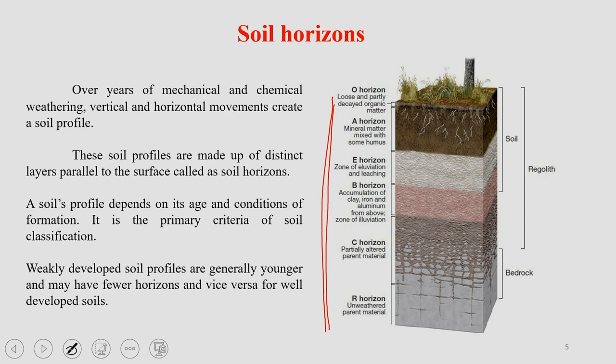A soil profile is obtained by digging to around 100 to 120 centimeters in depth. This profile shows the processes through which the soil is getting developed and the different characteristics of individual horizons. In a soil profile, we have different horizons. The main divisions include bedrock at the bottom, then regolith, and several soil horizons above.